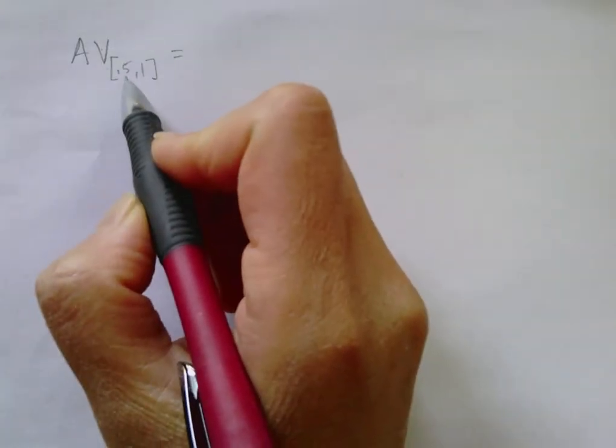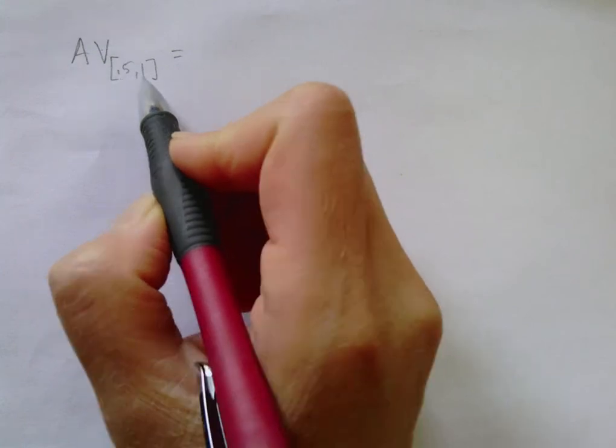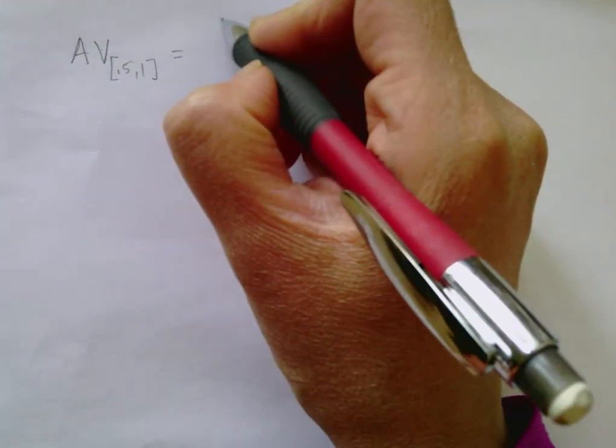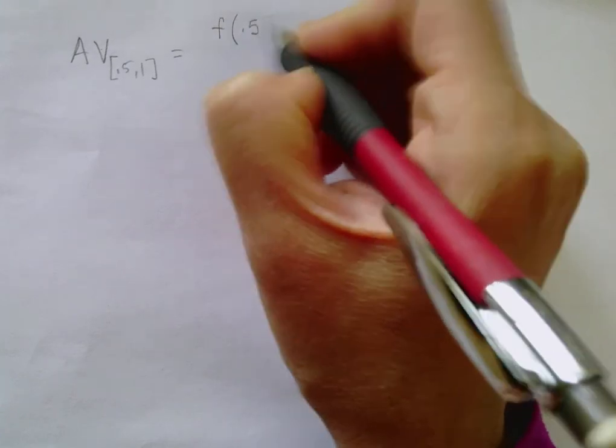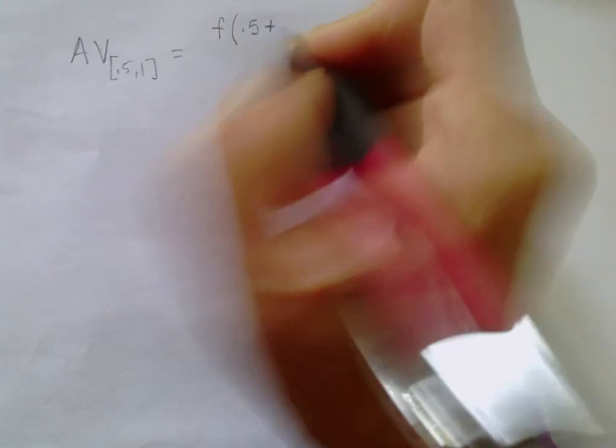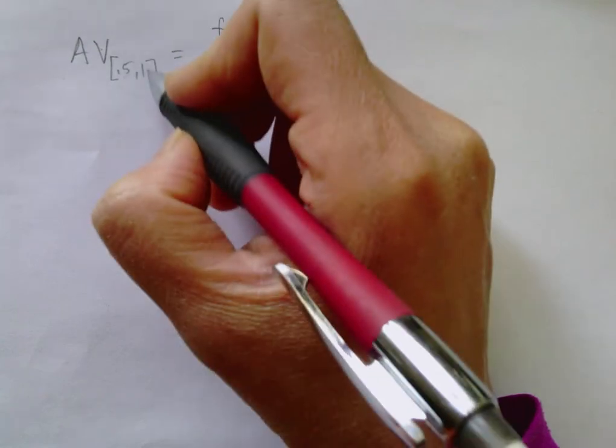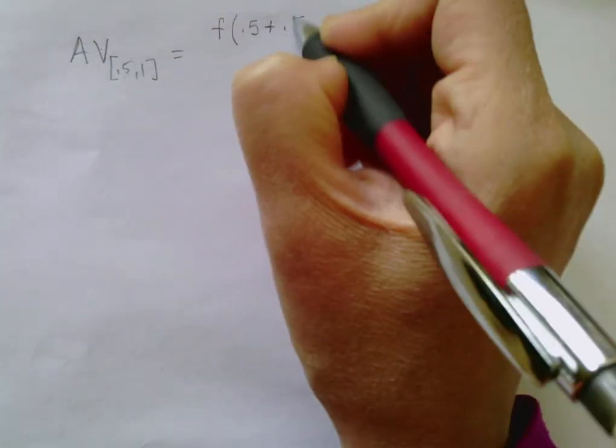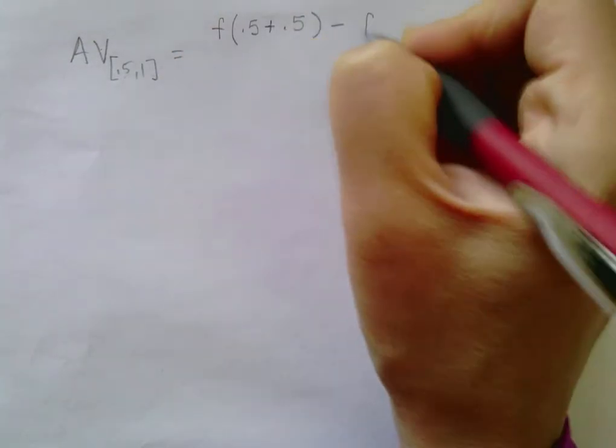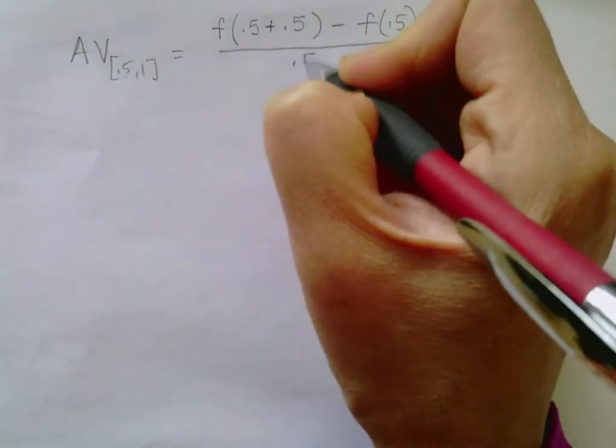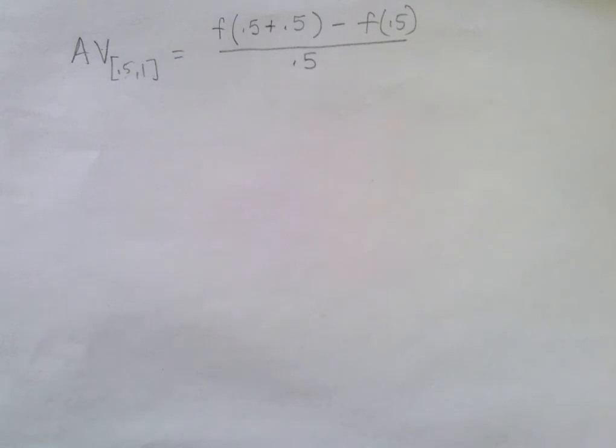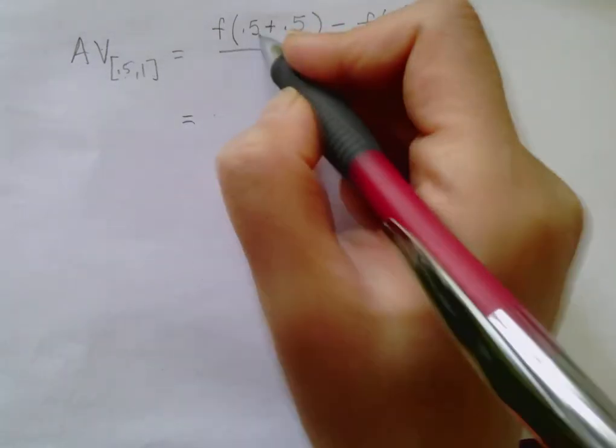Okay, and we can do all these computations in this format as well. So we can write in the following way: the average velocity between half a minute and a minute is f of 0.5 plus the difference between 1 and 0.5, which is 0.5, minus f of 0.5, all over 0.5.